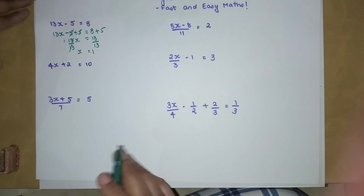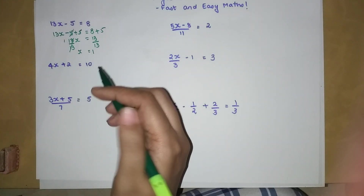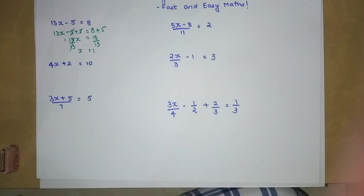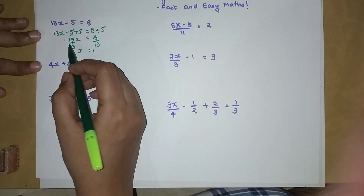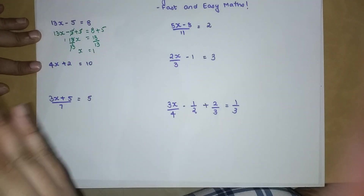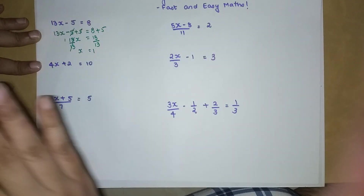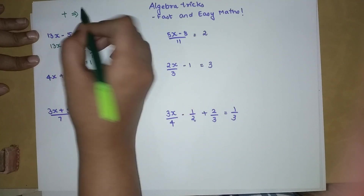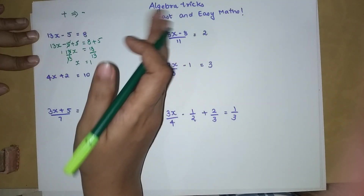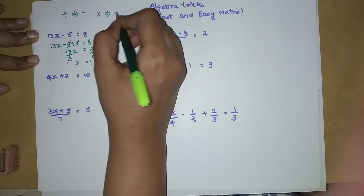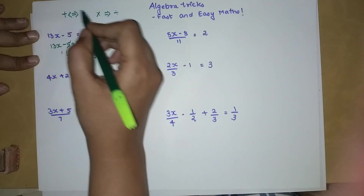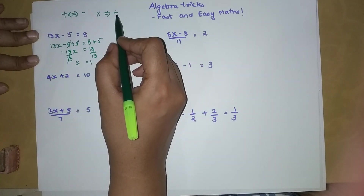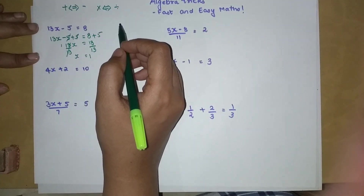Please understand — you cannot make the coefficient equal to 0, because 0 times anything is always 0. When a number is being multiplied we divide; when a number is being divided we multiply. If a number is being added, subtract the same number from both sides. If a number is being multiplied, divide both sides by that number, and vice versa — if it was being subtracted, add it to both sides; if divided, multiply both sides.